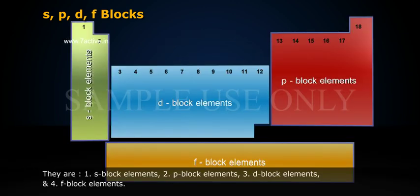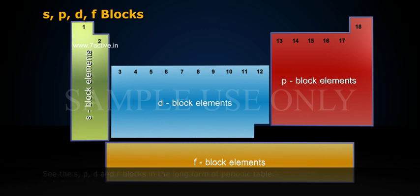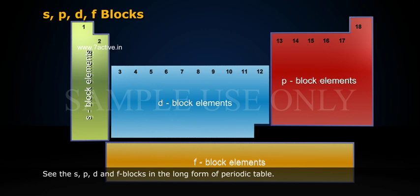They are: 1. S-Block Elements, 2. P-Block Elements, 3. D-Block Elements, and 4. F-Block Elements. See the S, P, D and F blocks in the long form of the Periodic Table.